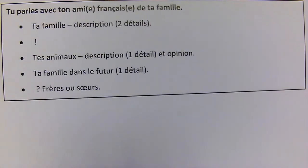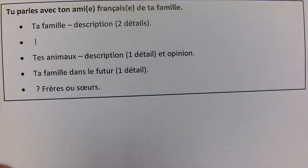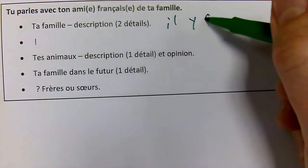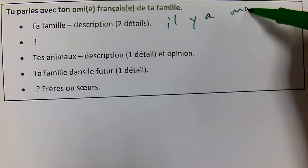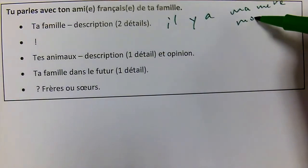So this one says: 'tu parles avec ton ami français ou française de ta famille.' First question: ta famille — description, two details. What kind of details would you give? What you could start with is maybe how big or small your family is, and then say who's in your family. That is definitely going to be two details. So you could say 'dans ma famille il y a ma mère, il y a mon père' — ma mère, mon père, masculine.